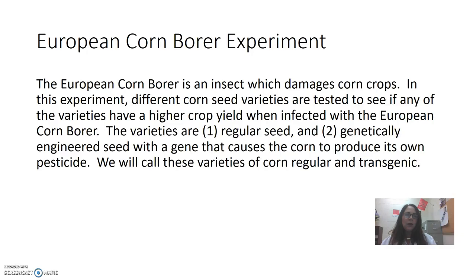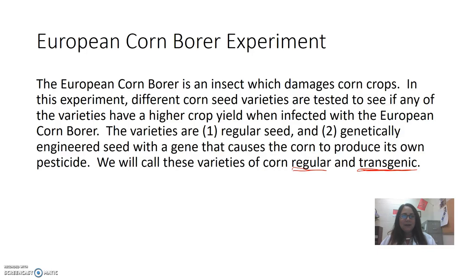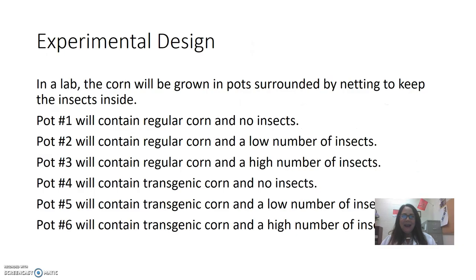genetically engineered seed with a gene that causes the corn to produce its own pesticide. We're thinking that variety number two is going to have a higher yield because it is resistant to the European corn borer. We'll call these varieties regular and transgenic — transgenic because the gene that produces the pesticide comes from a bacterium that can infect the European corn borer and kill it. We take that gene out of the bacteria and put it into the corn seed, making it transgenic.